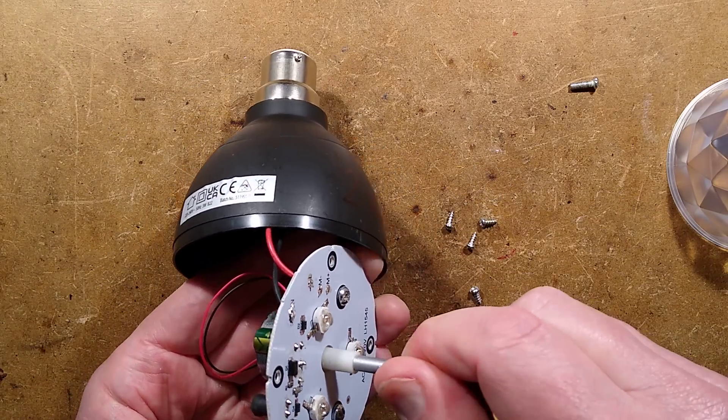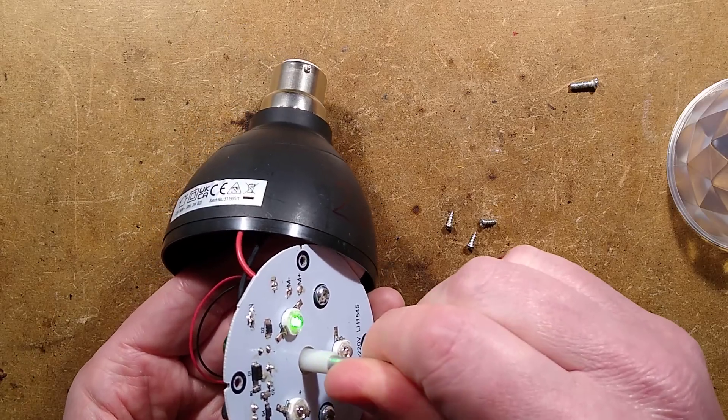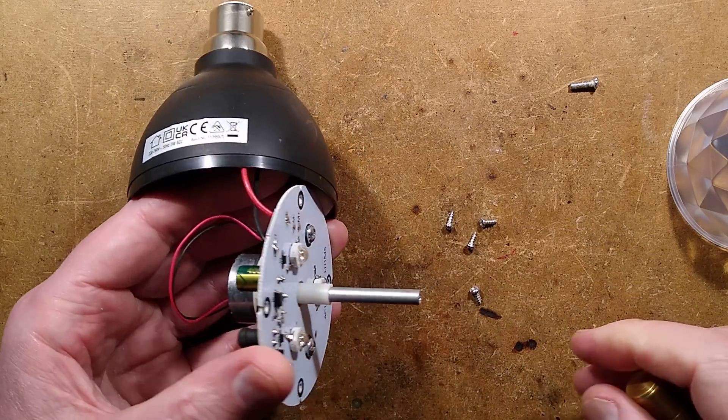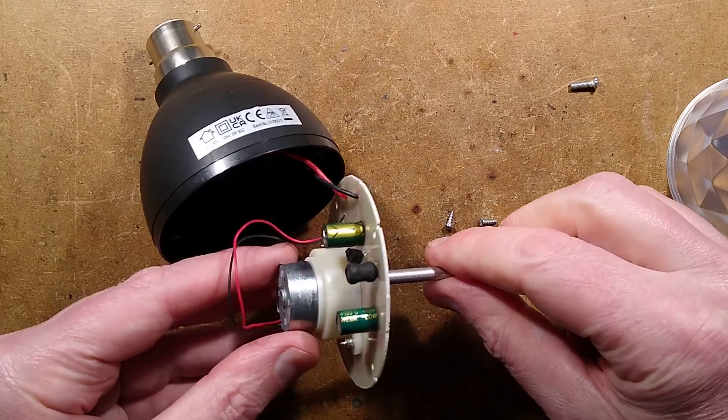Sometimes when you rotate the motor it makes the LED light up. It does, it's a green LED. And turning it the other way usually makes the others light up, if you do it fast enough at the risk of breaking all the gears in the gearbox.